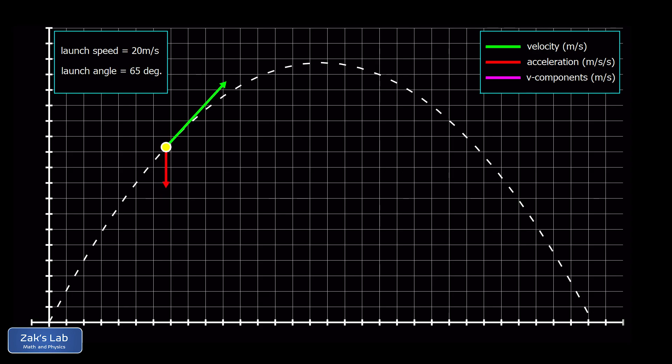Now, as the motion continues, we see that the velocity vector always stays tangential to the trajectory, but it's rotating in order to do that, and the magnitude is decreasing. In other words, the speed is getting smaller.